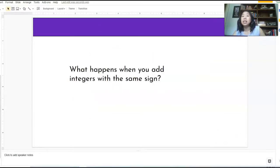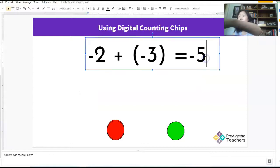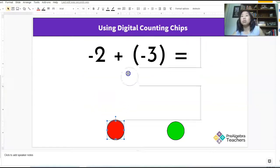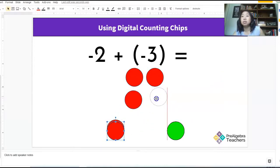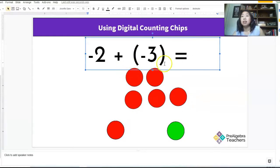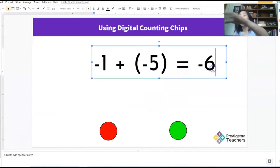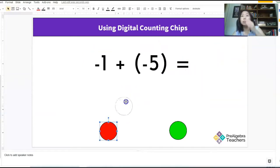Okay. So it looks like I'm subtracting here when the signs are different and I'm taking the symbol of the bigger absolute value. What happens when you add integers with the same sign? Let's see. Okay. I have two negatives and three positives. Okay. So again, these are all red. So it looks like I'm ending up with five negatives.